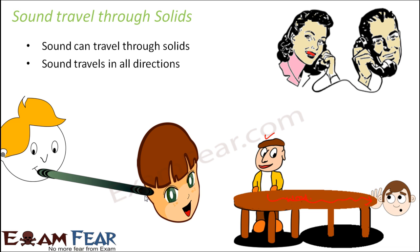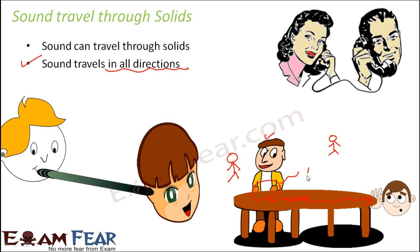Another important thing is that sound can not only travel through solids, it can also travel in all directions — it is not limited to one direction or linear travel. Now, this guy is beating the table — the source of sound is here. This person is able to hear the sound from here. If somebody is standing on another side, they will also be able to hear the sound, because sound travels in all directions from the source. So this was about propagation of sound through solids.